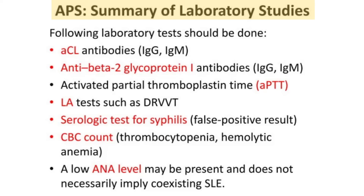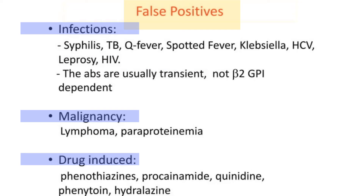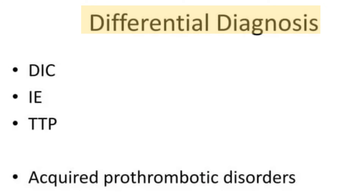In summary, the following laboratory tests must be performed for diagnosis: anti-cardiolipin antibodies, anti-beta-2 glycoprotein 1 antibody, activated partial thromboplastin time, lupus anticoagulant test, serologic test for syphilis, complete blood count, and ANA levels. Clinicians should also be aware that false positive results may occur in certain conditions.